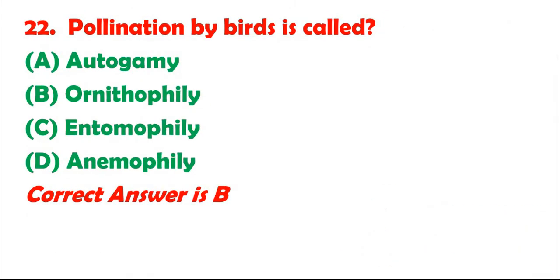Question 22: Pollination by birds is called: A. Autogamy. B. Ornithophily. C. Entomophily. D. Entomophily. Correct answer is B.